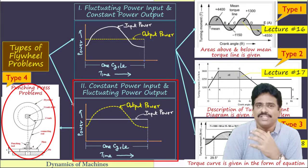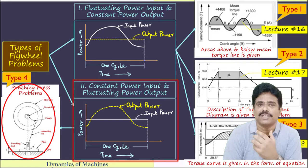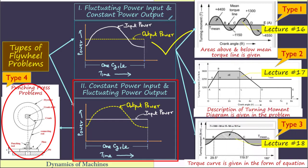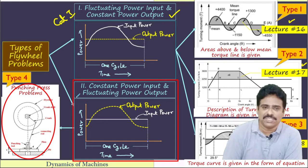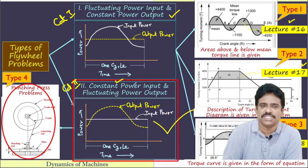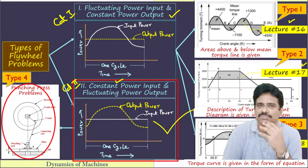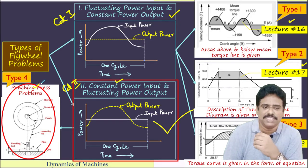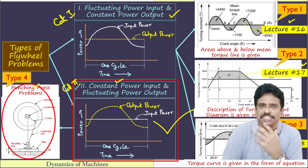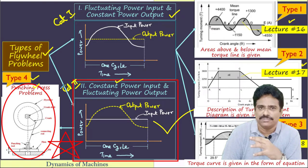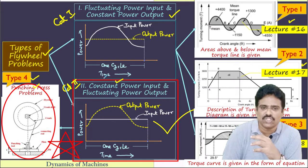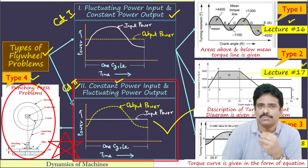We know that flywheels are required whenever there are fluctuations either in the power input or power output. As in the case of IC engines, we have fluctuating power input whereas the power output is constant. Sometimes the input power is constant whereas the power output will be fluctuating, as in the case of punching press, riveting machine, and shearing machine. In this lecture video, we are going to talk about various concepts as well as solve numerical problems involving flywheel in punching press.